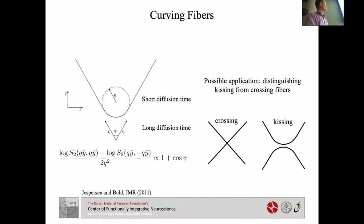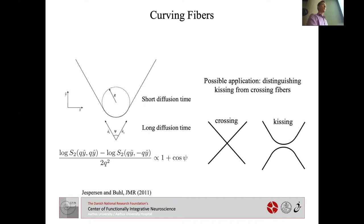You could also imagine using this to measure the curvature of fibers — purely theoretical work, not yet tried, and difficult because you'd get contributions from extracellular water. But if you could do it with metabolites, you could get a measure of radius of curvature and the angle between two fibers, since there are correlations between spins moving along successive legs of a curved fiber. In principle you could distinguish crossing and kissing fibers.